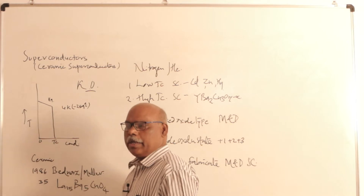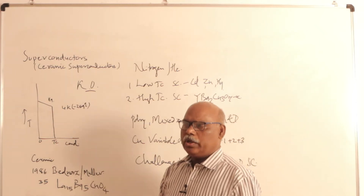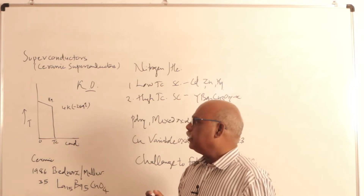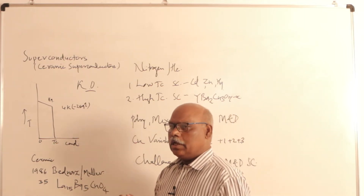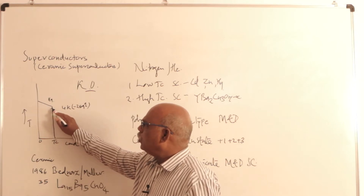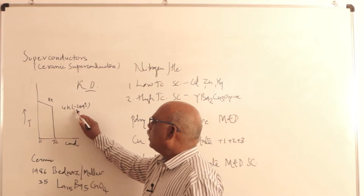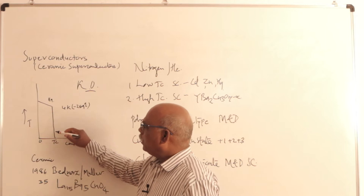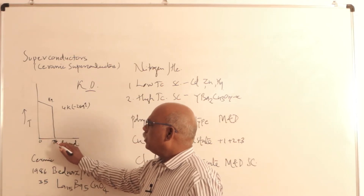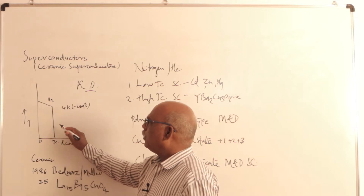He found that when the temperature of any material is decreased, conductance goes on decreasing. At the same time, when temperature of any conductor is increased, resistance goes on increasing — reasons we have already discussed in the last semester. When the temperature of mercury is decreased slowly, at a certain temperature — Kamerlingh Onnes found that at 4 Kelvin, that is minus 269 degrees centigrade — the resistance of this material falls to zero. There was no resistance offered by this material.